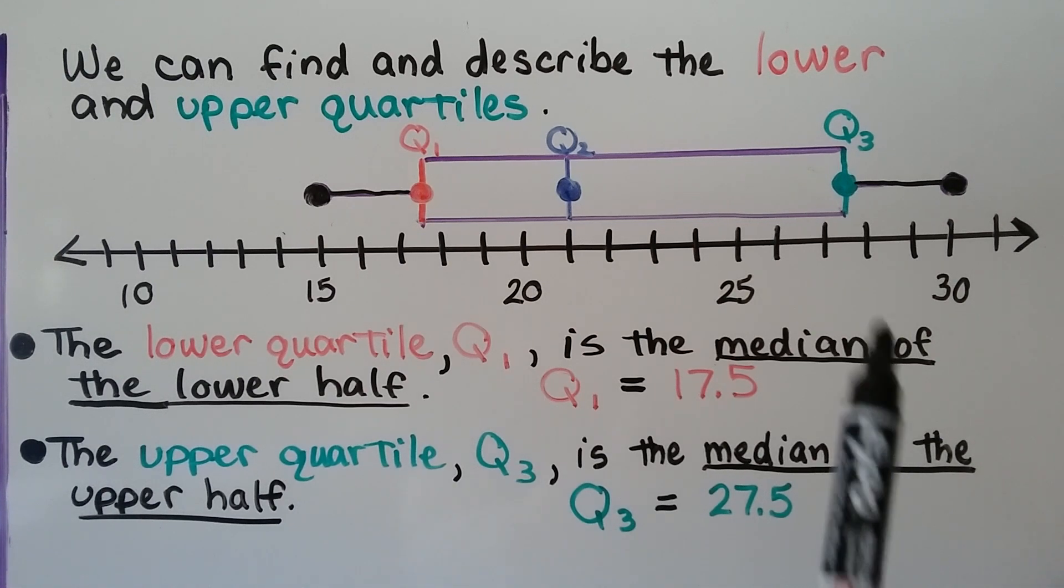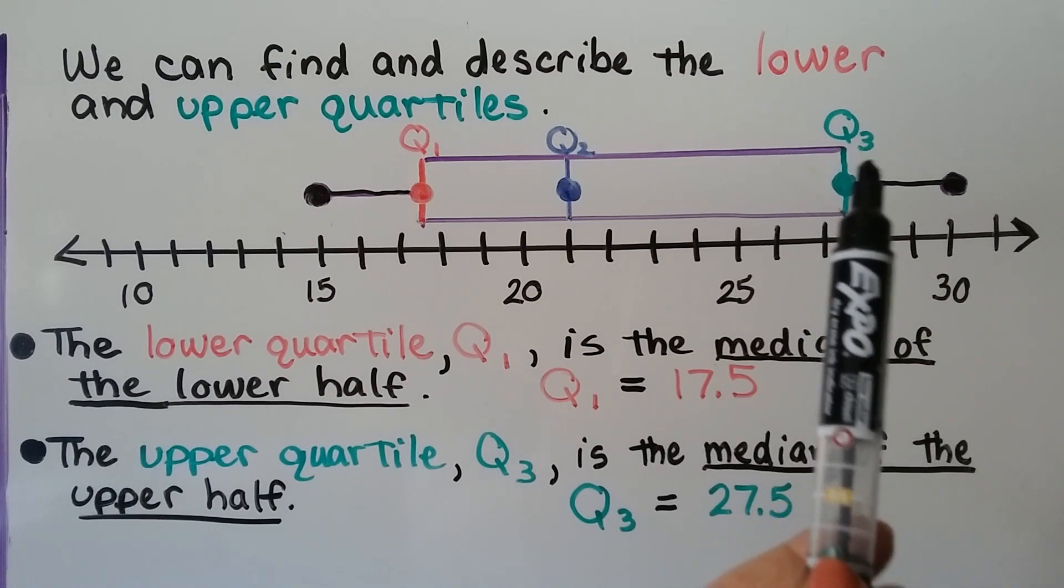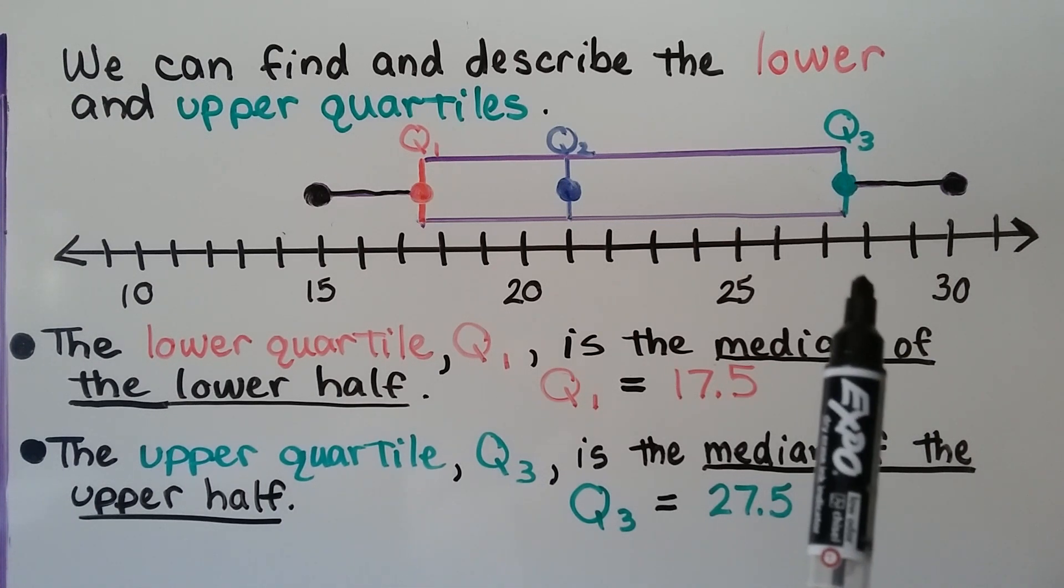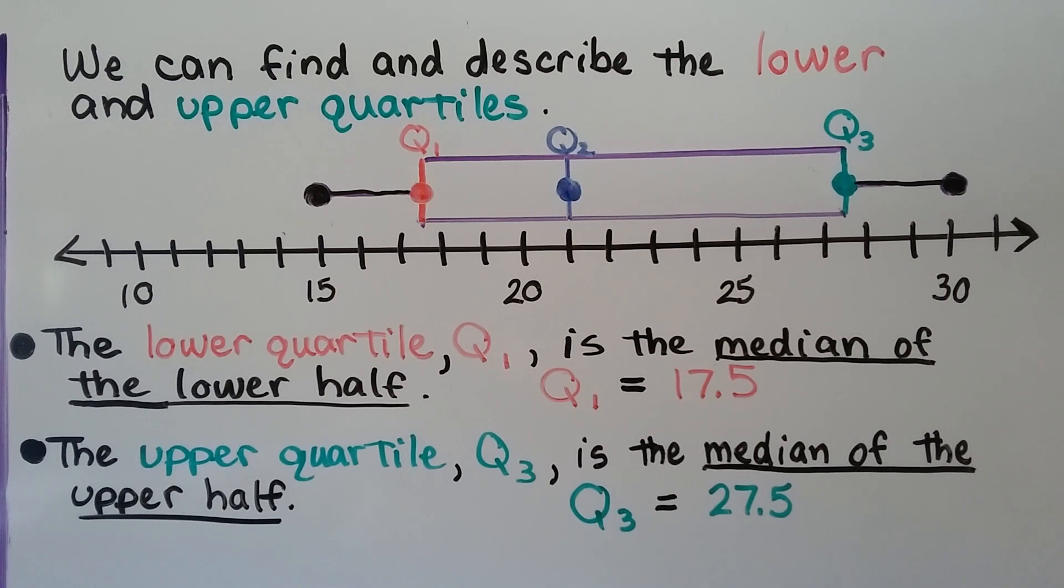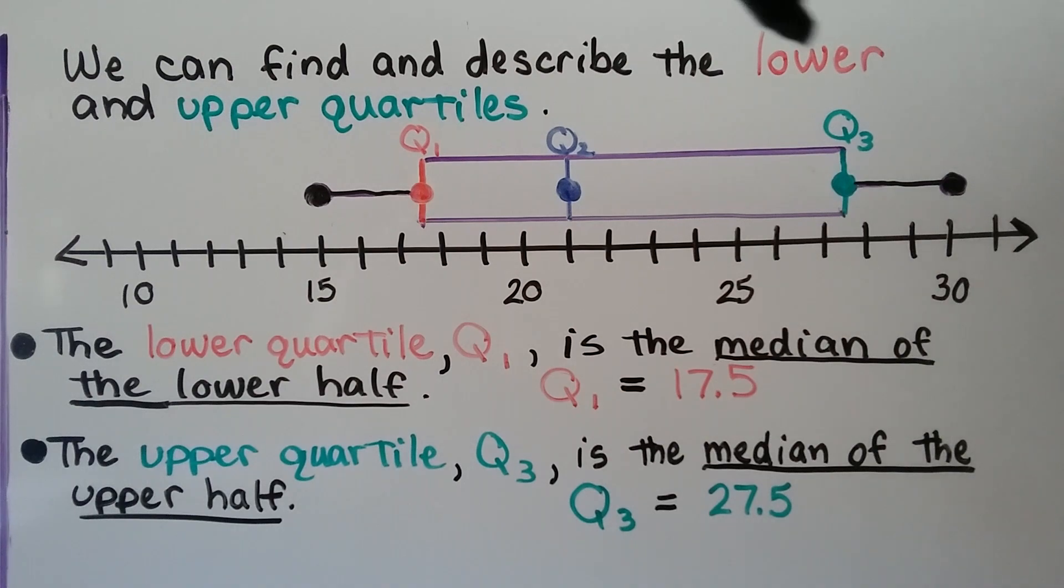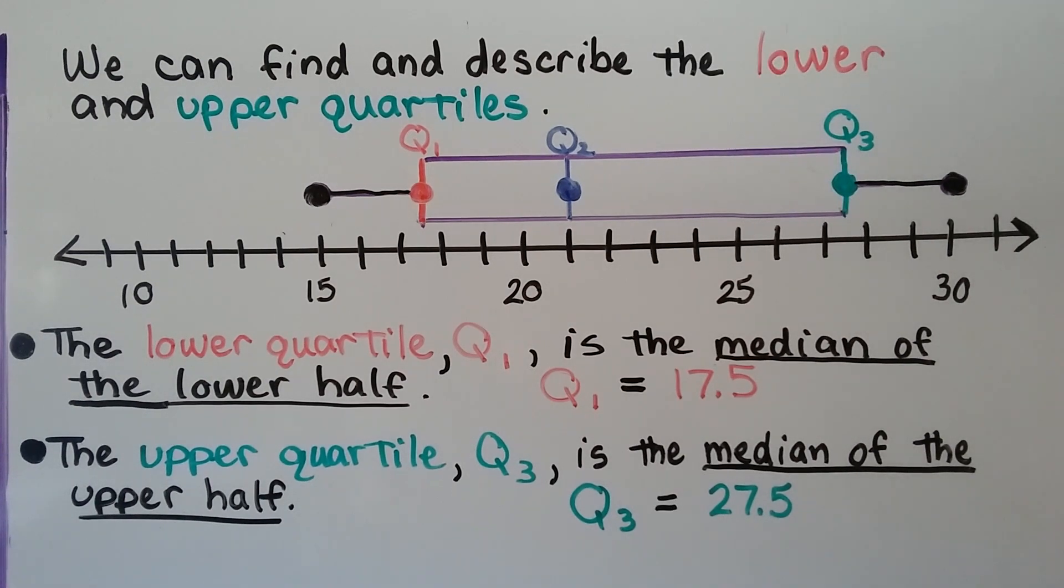The upper quartile, that's this Q with a sub 3, it's the median of the upper half, and it's at 27.5. So the first quartile is at 17.5, and the third quartile is 27.5.